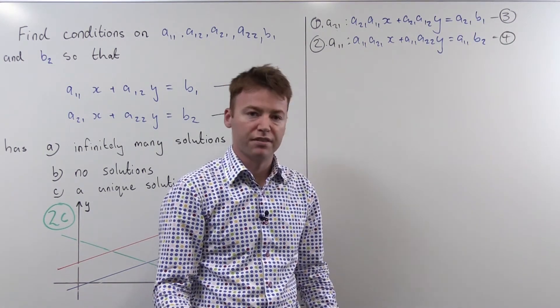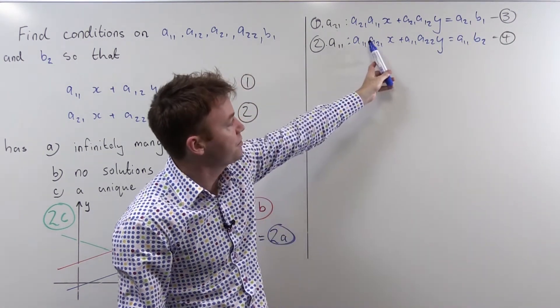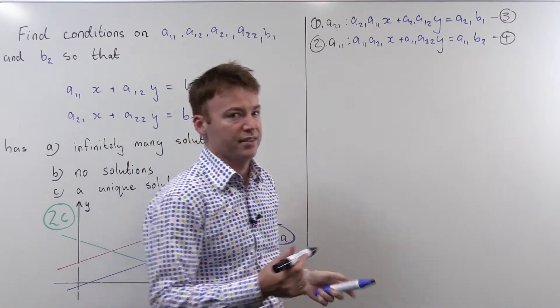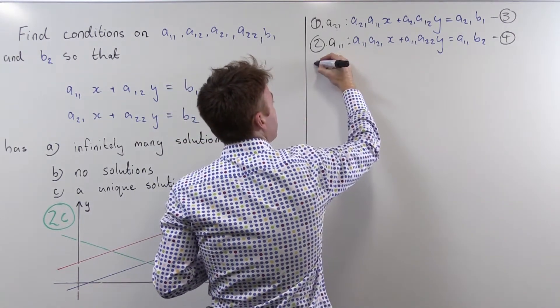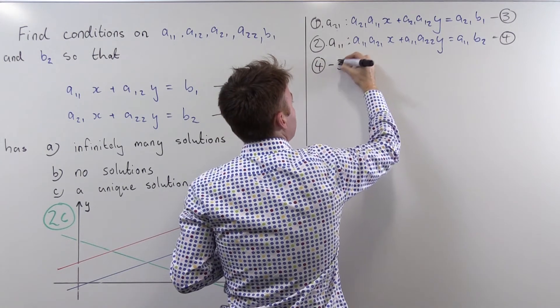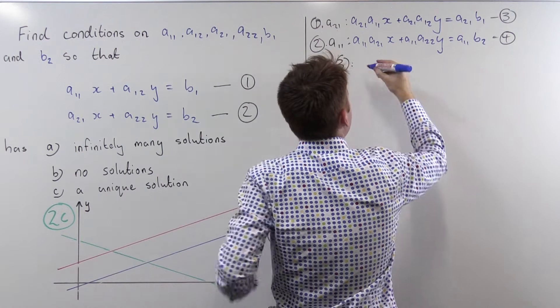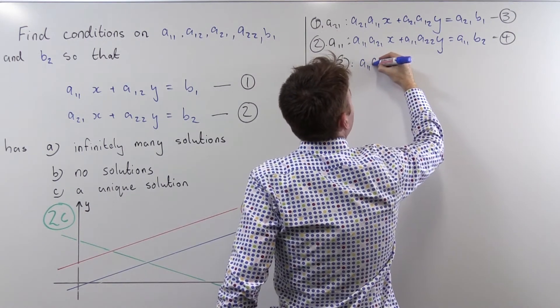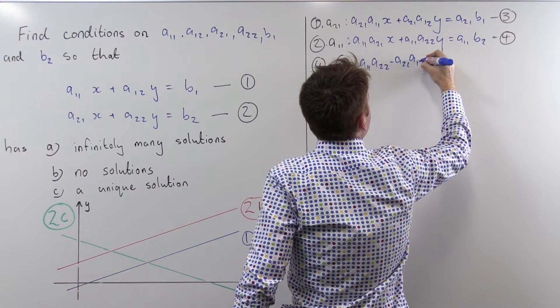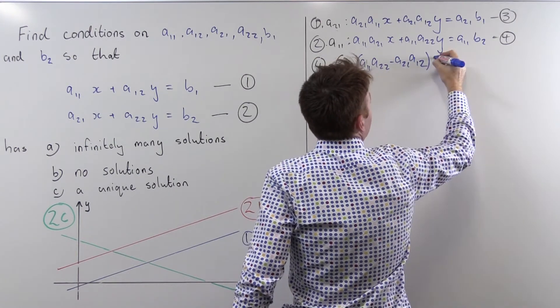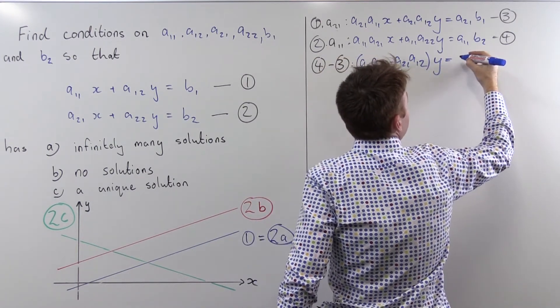And the reason I've written it this way is so I can take equation four minus equation three and have no x's. Let's do that. Equation four minus equation three gives me no x's and it gives me (a₁₁a₂₂ - a₂₁a₁₂) times y and some constants here.